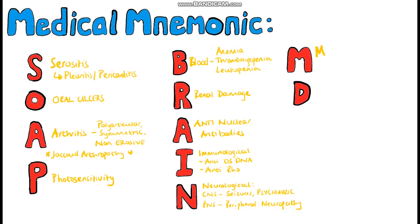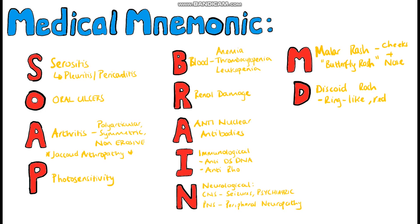M stands for the malar rash, which refers to the butterfly-like rash on the nose and the cheeks. D stands for discoid rash, which is the ring-like scaly patches that can occur in cutaneous lupus.